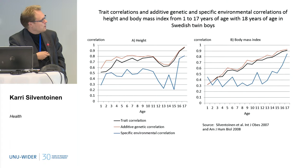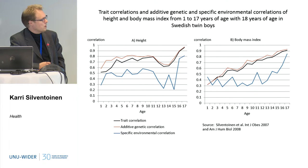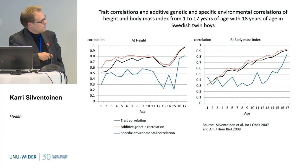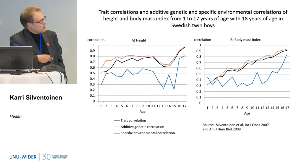This trait correlation shows that already at five years of age, the correlation with adult height is about 0.8. Even for BMI it's quite high at 0.6, and then it is rapidly increasing, so there is strong tracking in BMI also between childhood and adulthood, with some decrease just because of puberty. Because we had twin data used in this study, we were able to decompose this correlation into genetic and environmental correlations. Most of this correlation between childhood and adulthood in height was explained by genetic correlation — even higher than the trait correlation — and there is also a strong genetic correlation explaining BMI between childhood and adult BMI.